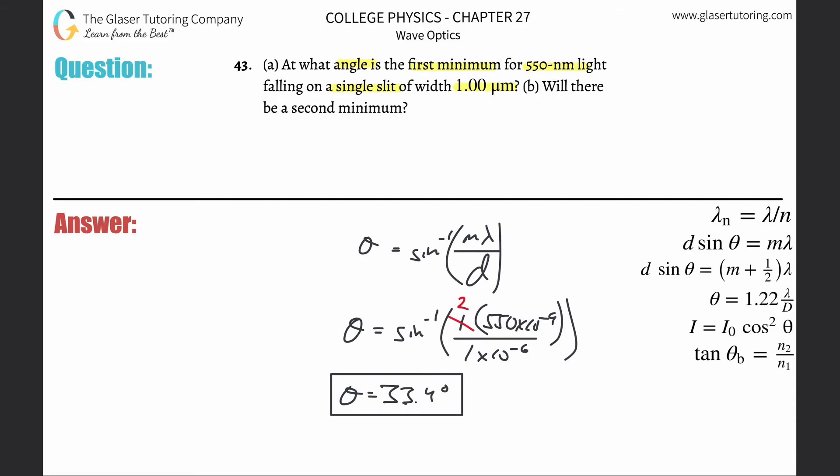Inverse sine of two multiplied by 550 times 10 to the minus ninth divided by one times 10 to the minus sixth. And oh, error domain. So guess what? No. The answer is no. There will not be a second minimum.